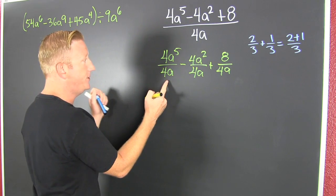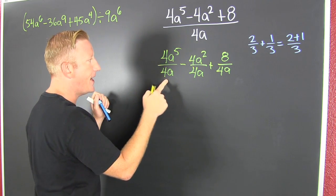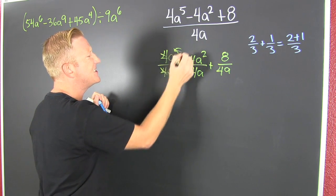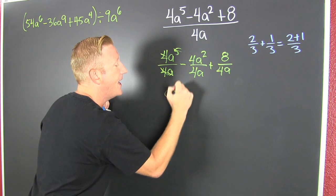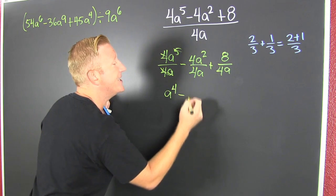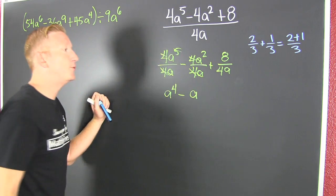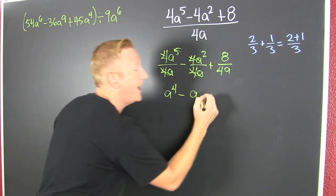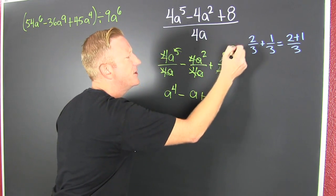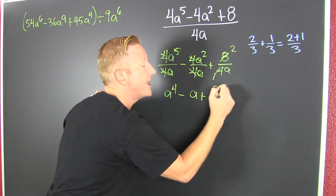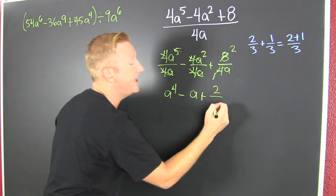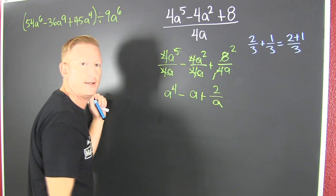I can reduce by 4a. And I have a to the 4th minus a. Okay. Plus, you're a 2, you're a 1. So that's 2 over that a doesn't reduce with anything.